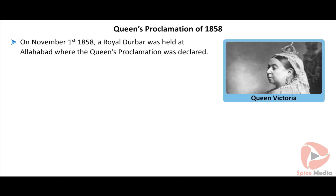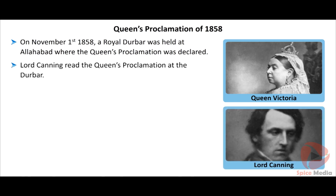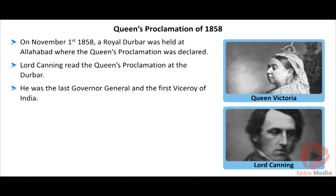On 1st November 1858, a royal darbar was held at Allahabad where the Queen's proclamation was declared. Lord Canning read the Queen's proclamation at the darbar. He was the last Governor-General and the first Viceroy of India.